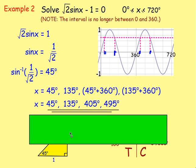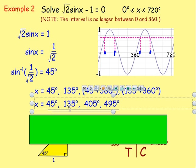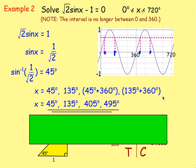Once you've got the answers, check these are in degrees — your answers have to be in degrees, that's fine. Also check your answers are going to be between 0 and 720. Just check all these answers are between 0 and 720, and they are.